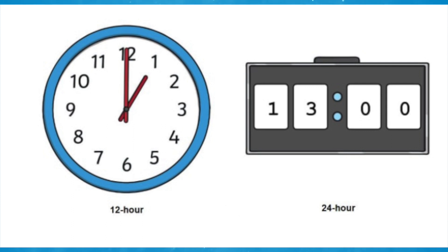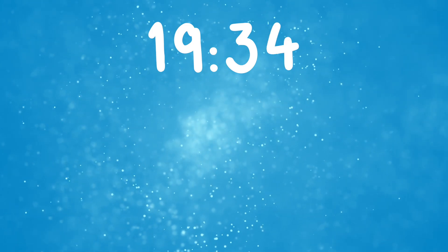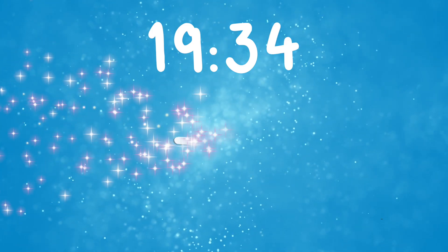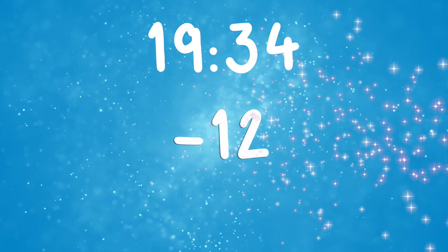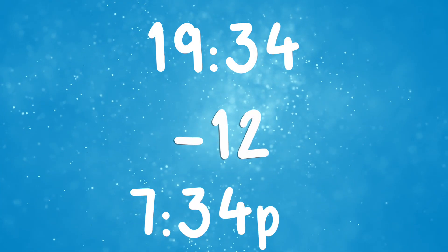To change time from 24-hour to 12-hour, you do the opposite. If it was 19:34 and you wanted to convert to the 12-hour clock, subtract 12 from that hour. This gives us 7:34pm.